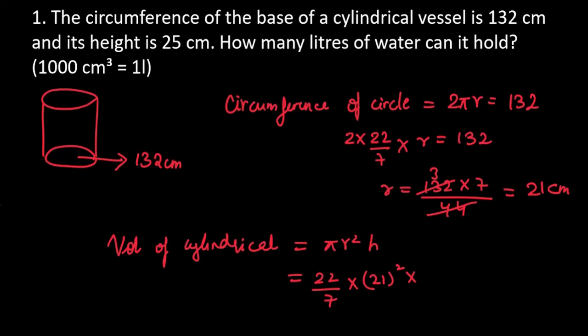h here is 25 cm. Now we can find the volume. Volume of cylindrical is πr²h, which equals 22 over 7, 21 square, 21 into 21 into 25. 7 you cancel from 21, you will get 3. Finally you will get the answer after multiplying these terms: 22 into 3 into 21 into 25, you will get answer as 34,650 cm³.